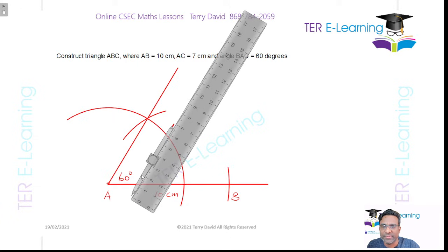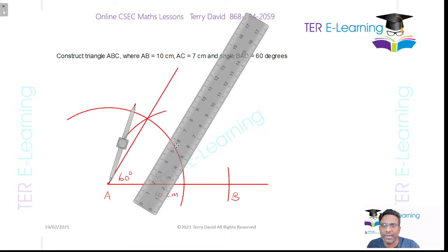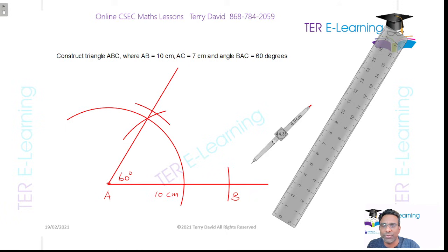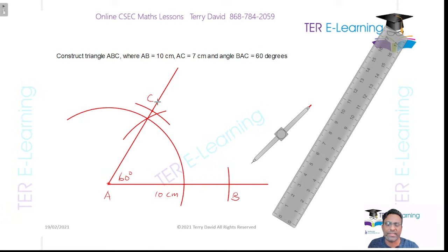Put your compass at point A and draw an arc that gives us a length of 7 cm. This arc here gives me a length of 7 cm, so this point here is my point C — that is where C is located.